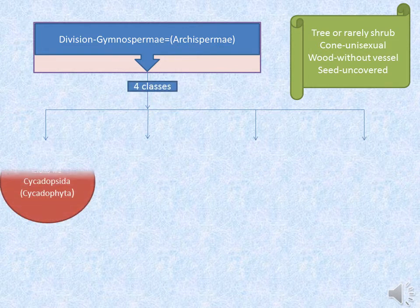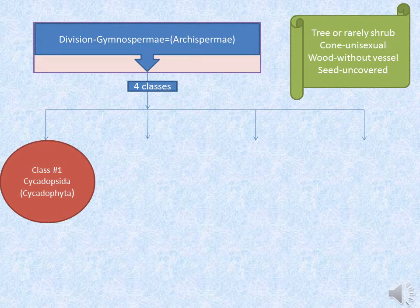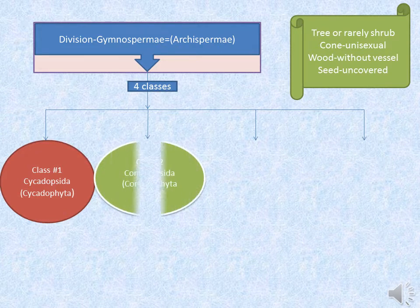Division Gymnospermia, also called Archispermia, has 4 classes.